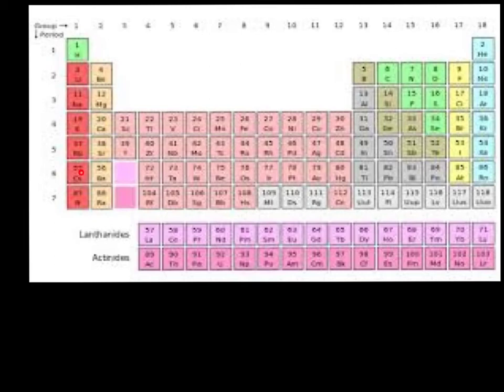Here we have column 1, column 2, and column 3, and so on. But we're most interested in columns 1, 2, and then 13 through 18 on the periodic table.